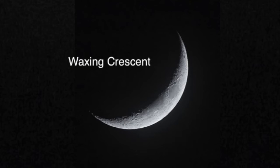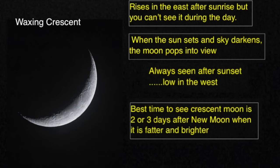After new moon, the first phase is called waxing crescent. In this phase, the moon rises in the east after sunrise but you can't see it during the day. When the sun sets and the sky darkens, the moon pops into view. It's always seen after sunset low in the west. The best time to see the crescent moon is two or three days after the new moon when it is fatter and brighter.